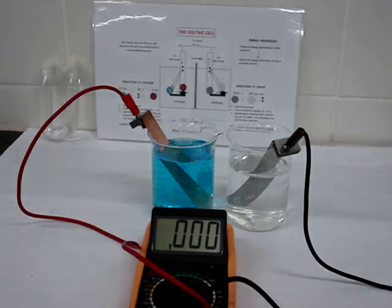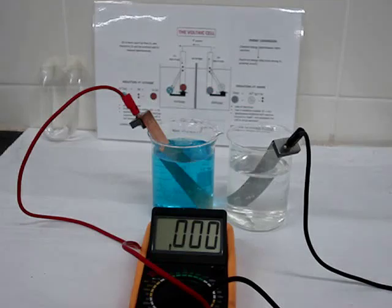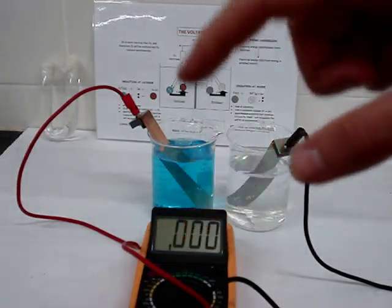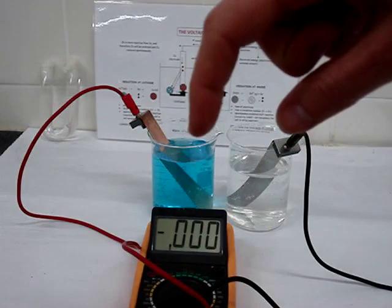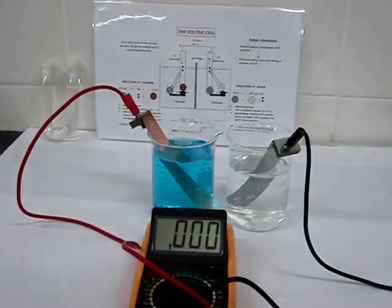They are connected via these crocodile clips to a multimeter set as a voltmeter, which is not reading anything at the moment because they are not generating a potential difference across them. There we can see the completion of that circuit there.